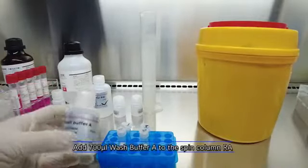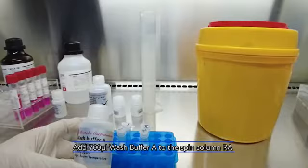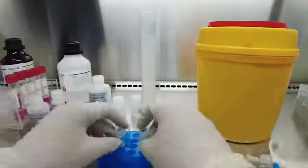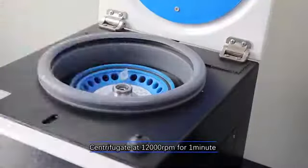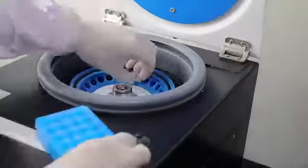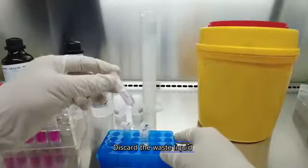Add 700 microliter wash buffer A to the spin column I. Centrifugate at 12,000 revolutions per minute for two minutes. Discard the waste liquid.